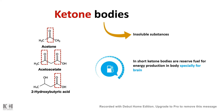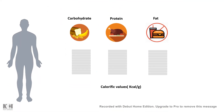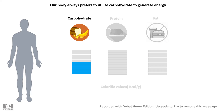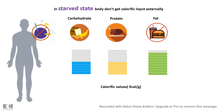In a normal state we have carbohydrate, protein, or fat in our dietary input. These have different calorific values — protein and carbohydrate have a calorific value near 4 kilocalories per gram, whereas fat has a higher calorific value. Even so, under normal conditions the body would try to utilize carbohydrate to generate energy because it's an easy source for the body.